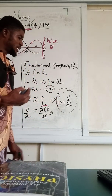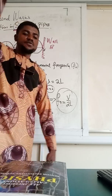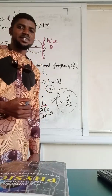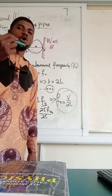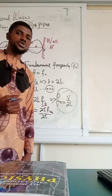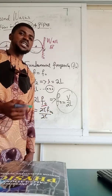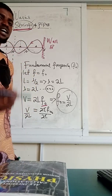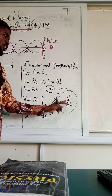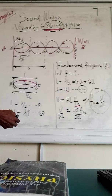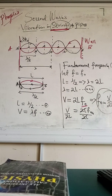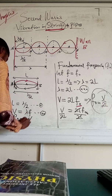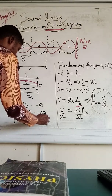The fundamental frequency is the frequency obtained in one single loop of vibration in a string instrument. It is the frequency obtained in one mode of vibration. The frequency obtained in one single loop, one mode of vibration, is what we call the fundamental frequency. It is given as F naught equals V over 2L. We call this equation number one.